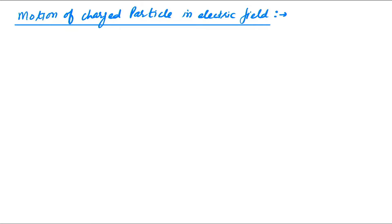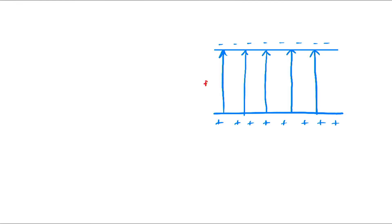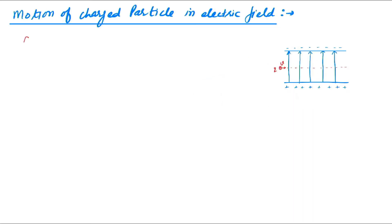First of all, let's try to find out the motion of a charged particle in an electric field. For that, let us consider a charged particle placed in a uniform electric field. Let e be the electric field across these two plates, and if d is the distance between them and v is the potential, then we can write that e is equal to v upon d.